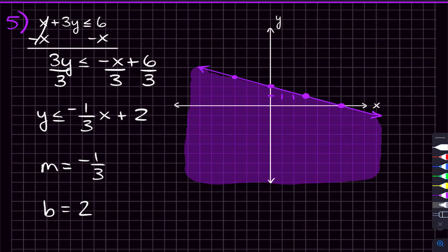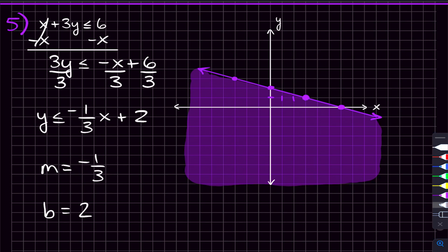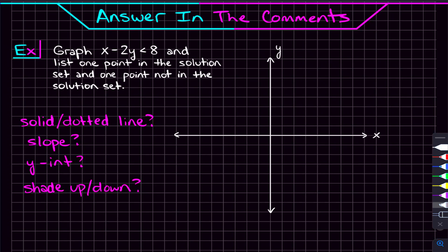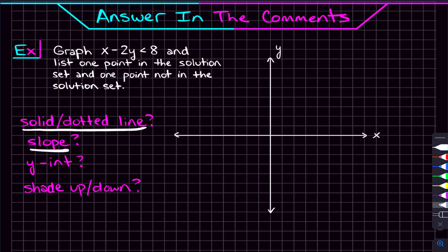So that's graphing linear inequalities in a nutshell. And if you feel pretty comfortable with this at this point, here's a problem for you to try and answer in the comments: graph x minus 2y is less than 8, and list one point that's in the solution set and one point that's not. In the comments, tell me whether this is going to be a solid or a dotted line, tell me what the slope of this line is going to be, tell me what the y-intercept is, and whether we're going to be shading up or down. Let me know your answer in the comments, and if you have any questions on anything we talked about in this video, let me know and I'll try to get back to you.